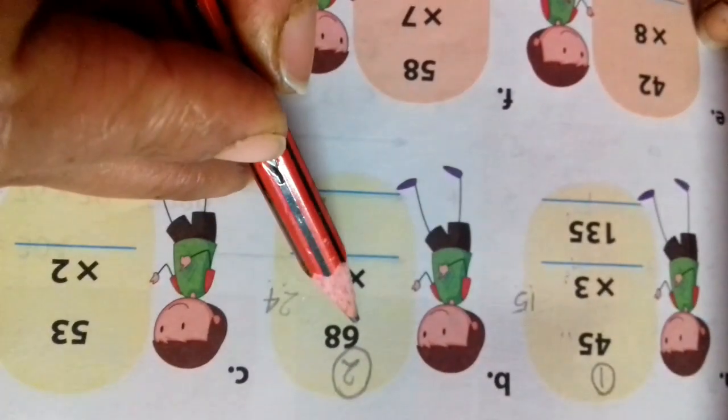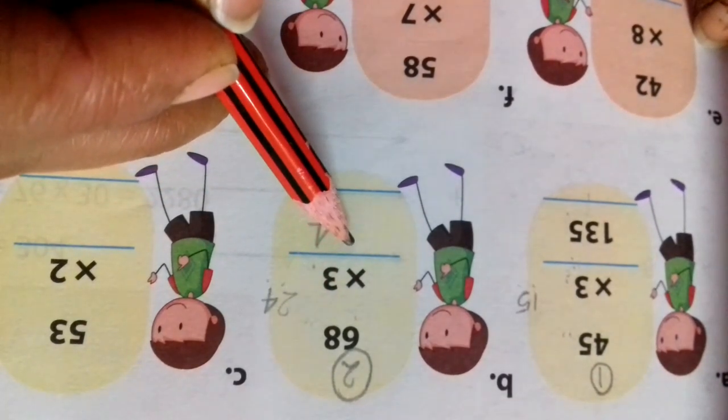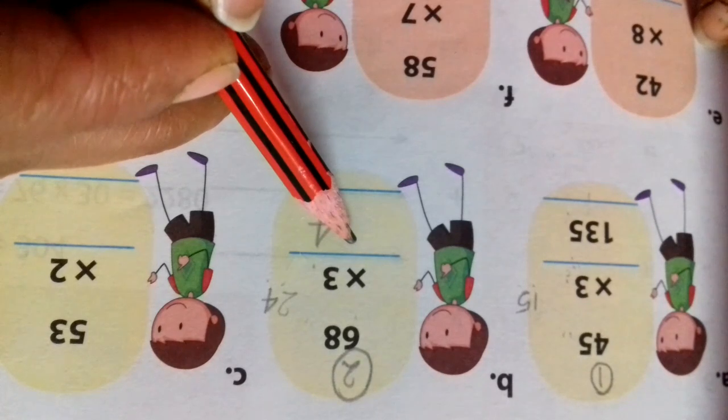3 key table is 6 times. 3 ones are 3, 3 twos are 6, 3 threes are 9, 3 fours are 12, 3 fives are 15, 3 sixes are 18.